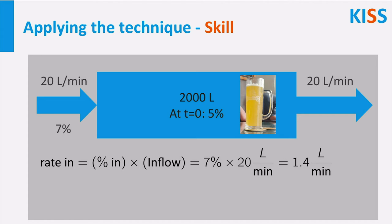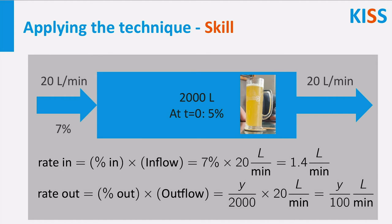The rate out of alcohol is trickier. The outflow is also 20 liters per minute, but what is the alcohol percentage in the tank? Well, that is the variable Y, the amount of alcohol, divided by 2000 liters. So the rate out is Y divided by 2000 times 20 liters per minute, which simplifies to Y divided by 100.